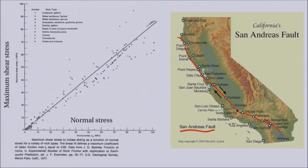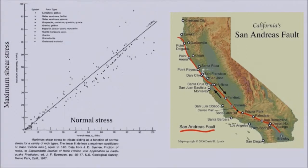So we get earthquakes here, and the earthquakes push up the mountains right behind us, and eventually will allow us to watch the 49ers locally, as opposed to having to fly or take the Hyperloop up to San Francisco.